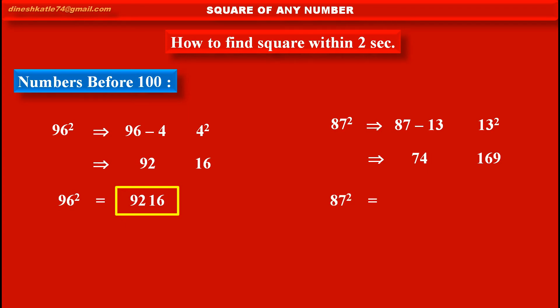Therefore, 87 square is equal to... Now, from second part, we can take only two digits. But here, in this case, we have three digits: 1, 6 and 9.